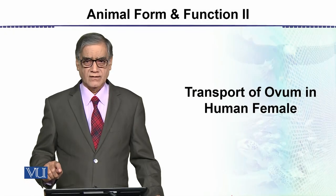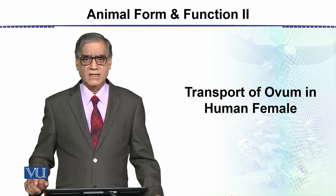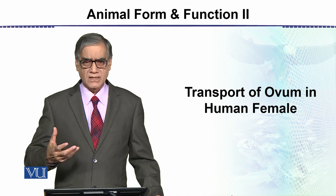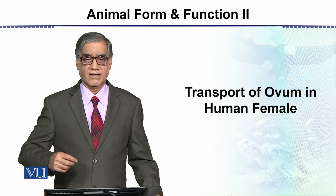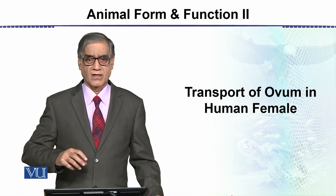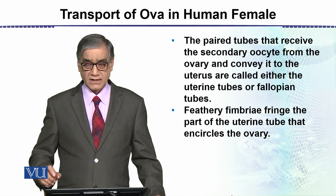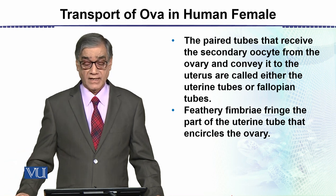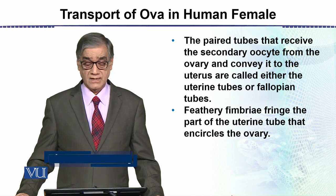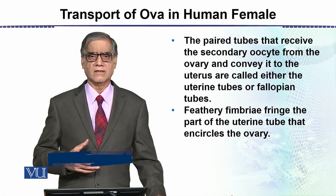This topic is the transport of ovum in human female. After ovulation, we need to see what the root of the released egg is and where it moves. The paired tubes that receive the secondary oocyte from the ovary and convey it to the uterus are called either the uterine tubes or the fallopian tubes.